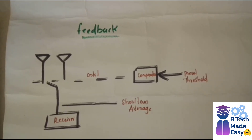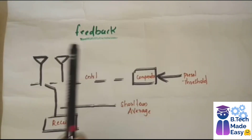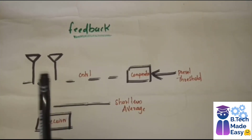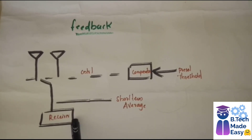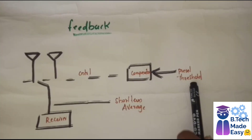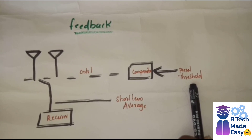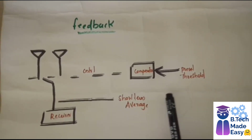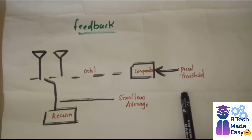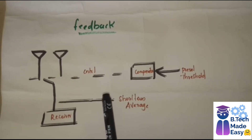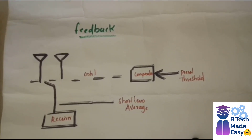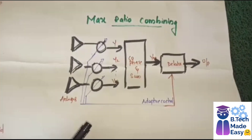The next type of spatial diversity is feedback. Here, many antennas are used but only one receiver is used. A preset threshold is set, and when the signal increases past the preset threshold, it is locked and scanned by the combiner and the output is produced.